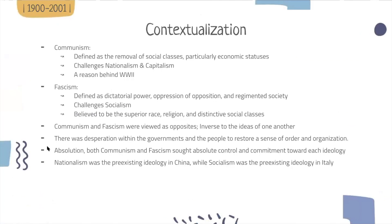Contextualization. Communism is defined as the removal of social classes, particularly economic statuses. It challenges nationalism and capitalism, and it was a reason behind World War Two. Fascism is defined as dictatorial power, oppression of opposition, and regimented society. It challenges socialism and is believed to favor a superior race, religion, and distinctive social classes. Communism and fascism were viewed as opposites, inverse to the ideas of one another. There was a desperation within the governments and the people to restore a sense of order and organization. Both ideologies sought absolute control and commitment. Nationalism was the pre-existing ideology in China, while socialism was the pre-existing ideology in Italy.